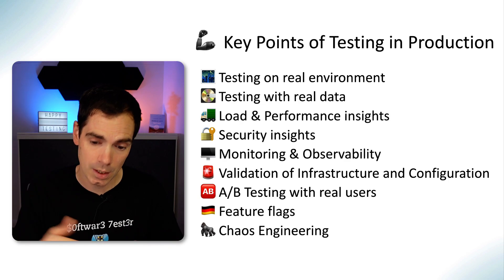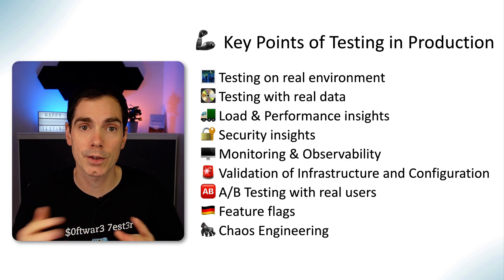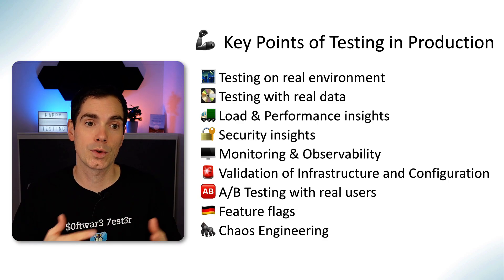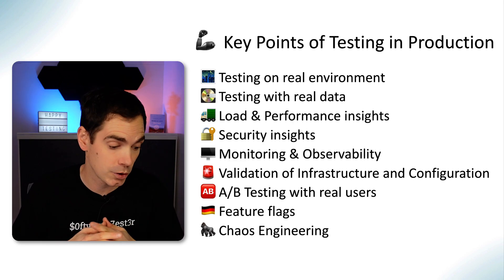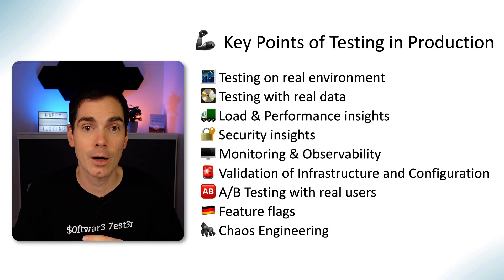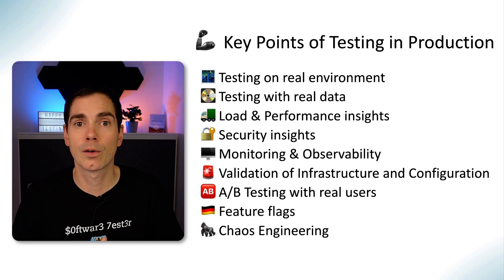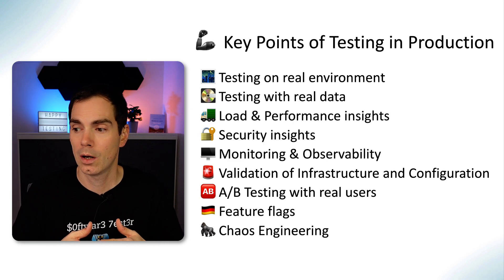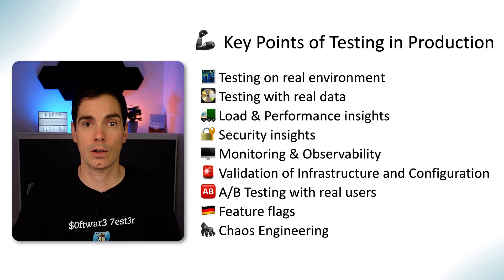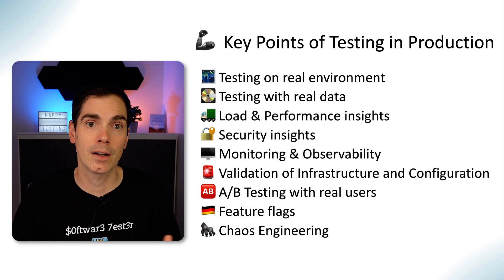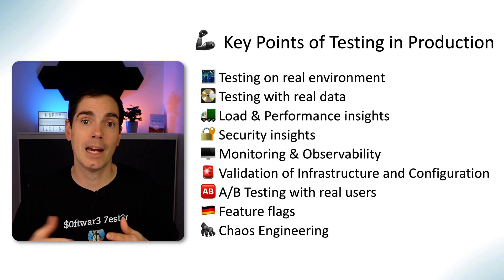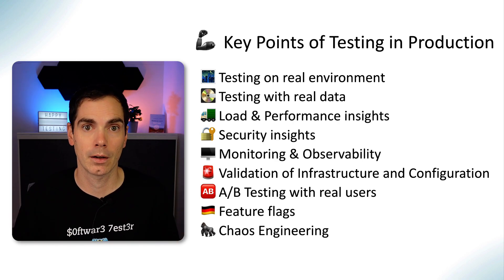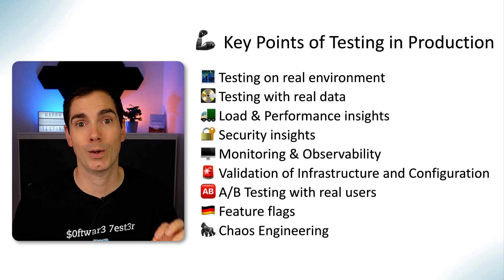Last but not least, a term you may have heard — introduced by Netflix — is chaos engineering. Netflix developed the Chaos Monkey (I'll put a link in the description). It's basically a mechanism where on the production environment you completely switch off servers or reconfigure load balancing to see how the system behaves and whether it's stable and mature enough to cope with those changes. That's something you should only do if you know what you're doing.